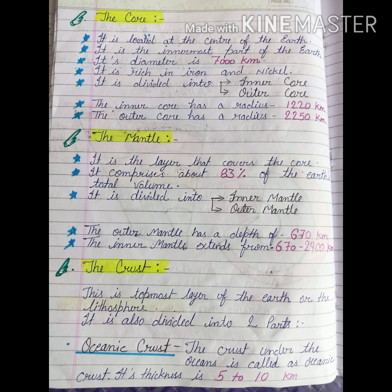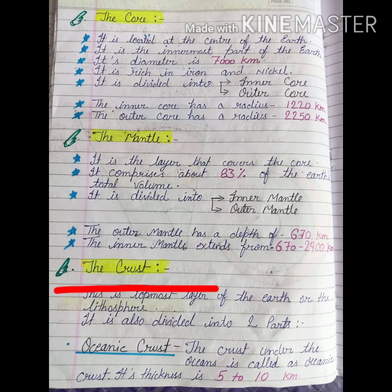The last layer is the crust, which is very important for us because we live here. It is the topmost layer of the earth. The crust is also divided into two parts, but unlike the core and mantle which have inner and outer divisions, the crust is divided into oceanic crust and continental crust.